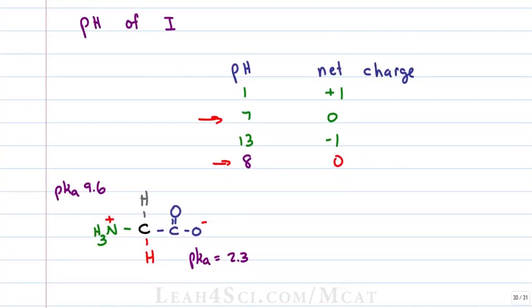The calculator gives a value of 5.95, which on the MCAT is close enough. Notice that 5.95 is less than seven and less than eight, but it is within the range where we have a charge of zero, and the isoelectric point gives us an exact calculated value.